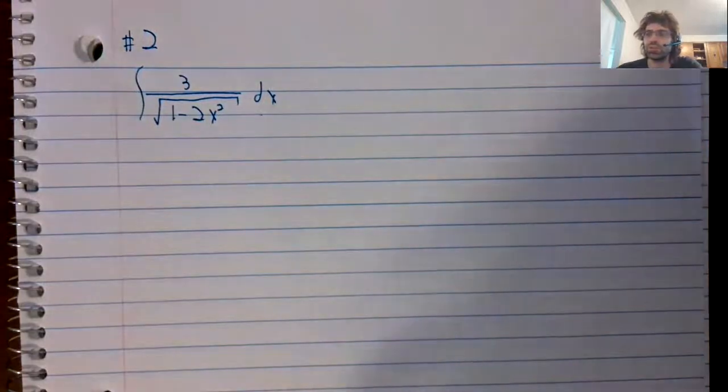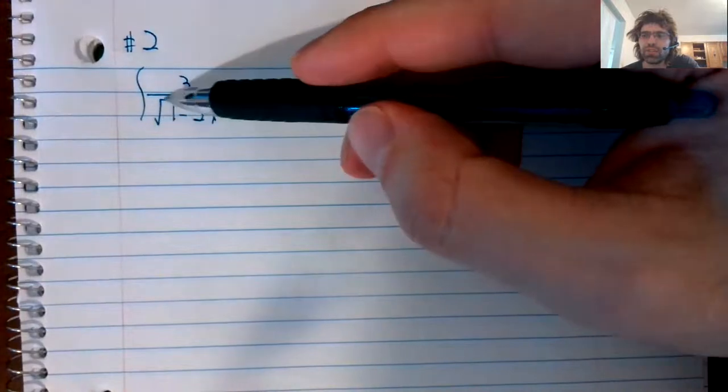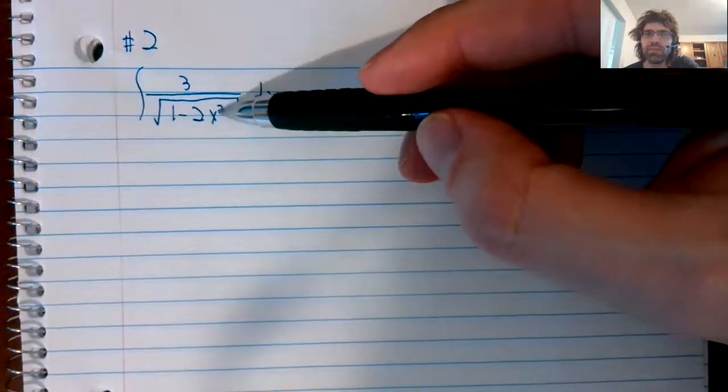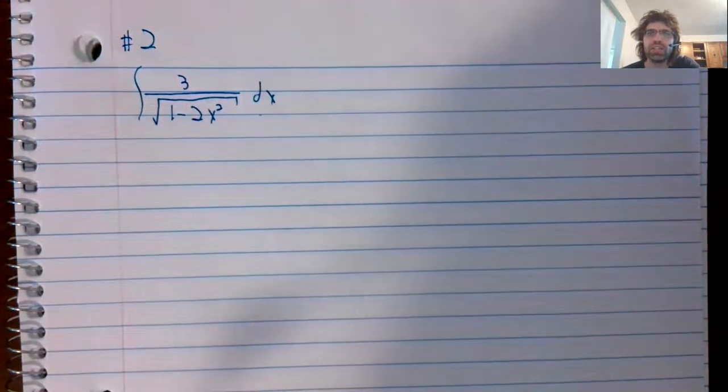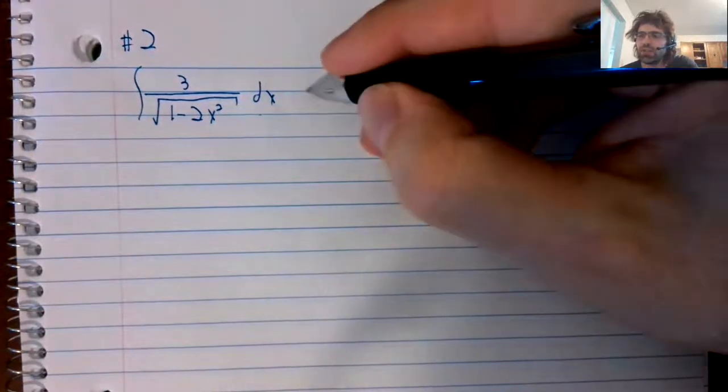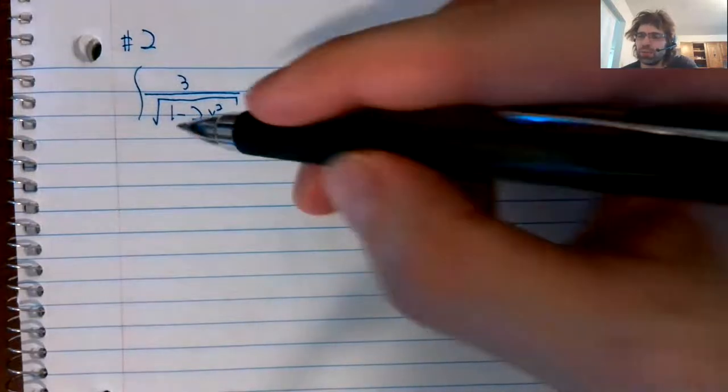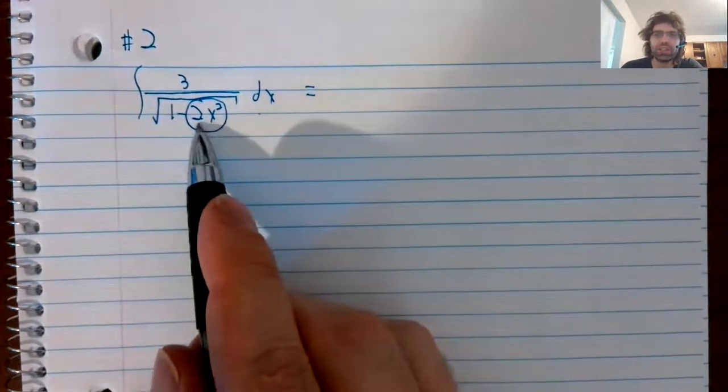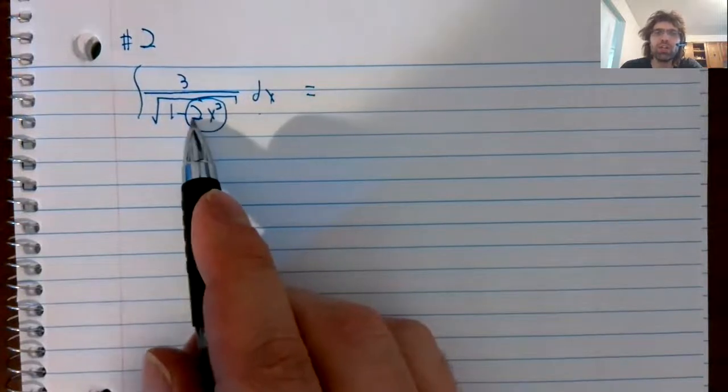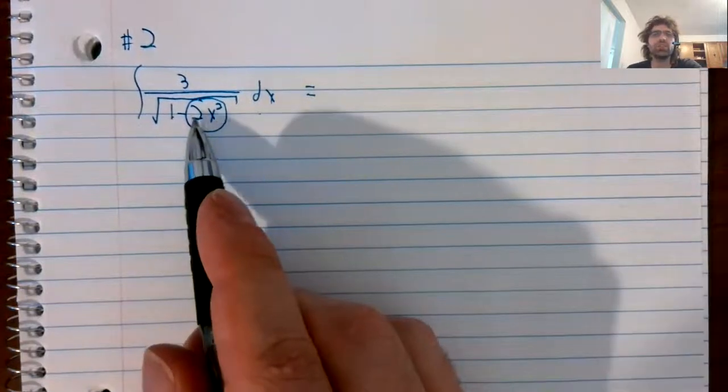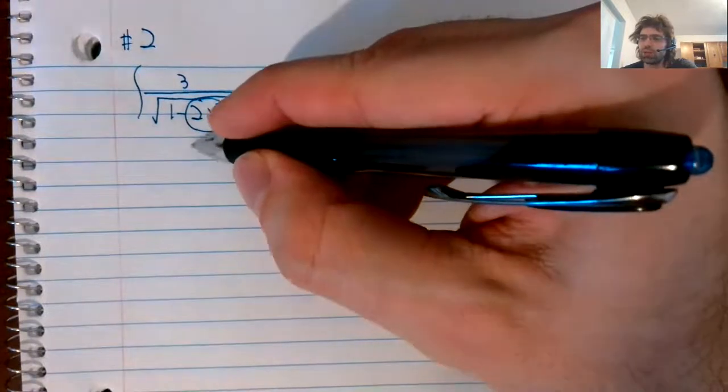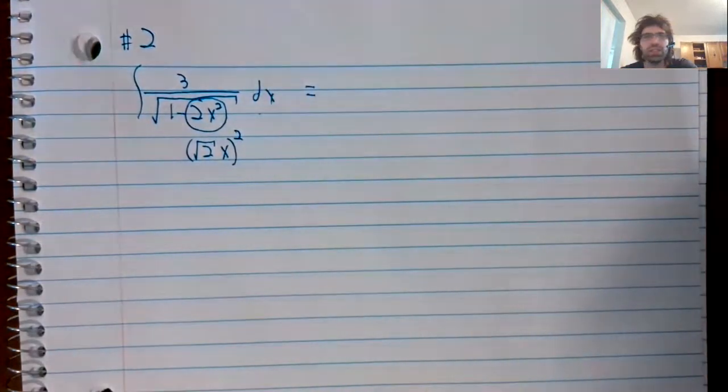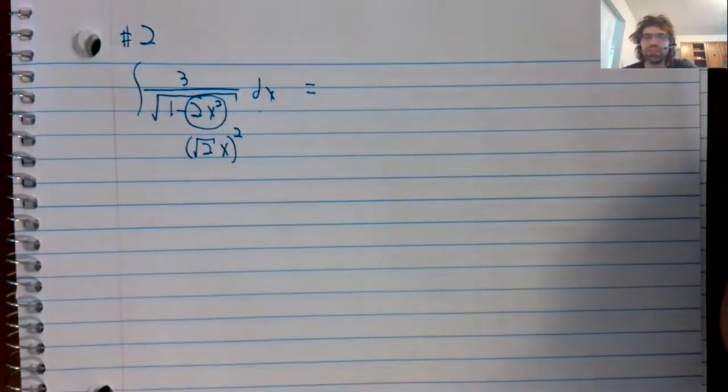For number two, we have this square root in the denominator. We've got one, we've got a minus, we've got a square. This looks a lot like the arc sine. For this to be the arc sine, what would we need? We'd need something squared here. That is, we have something squared, but we also have multiplication by two. And that we do not want.